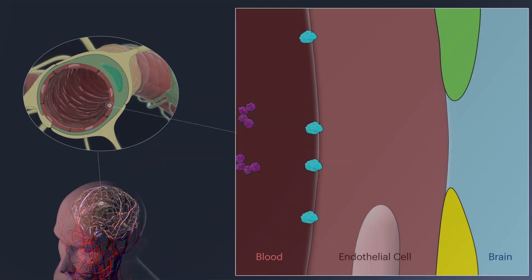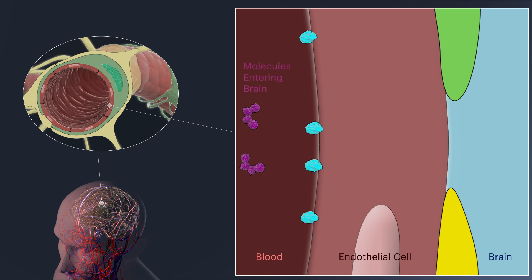To do this, they are exploiting the transcytosis process in which normally essential molecules such as insulin and iron, shown here in purple, are effectively shuttled across the blood-brain barrier. Specific transcytosis receptor proteins, shown in cyan, bind to their ligands on the blood-exposed surface of endothelial cells.